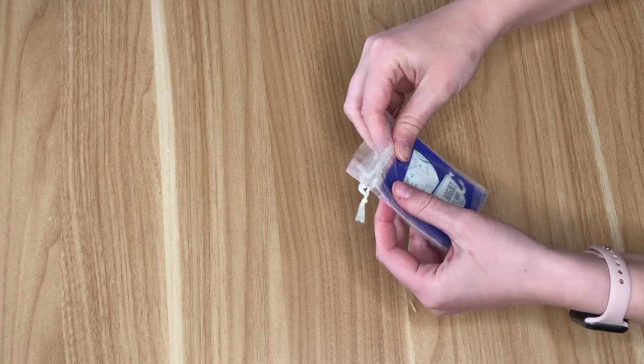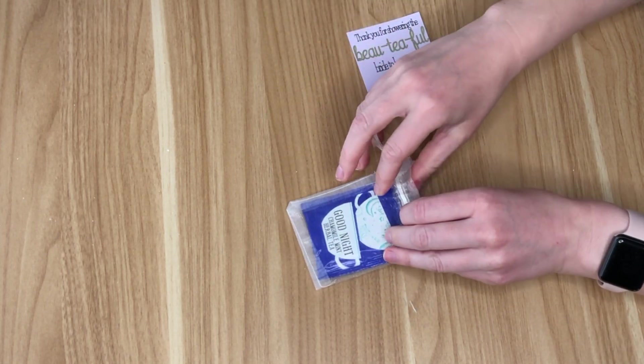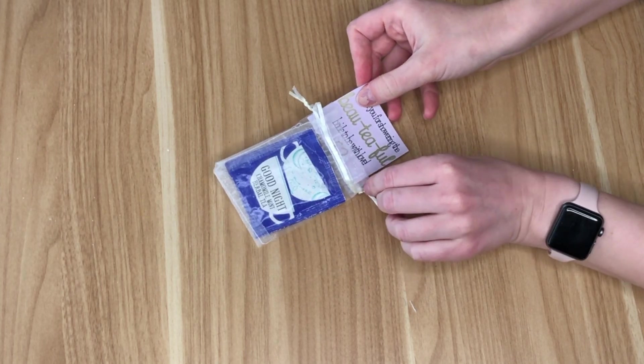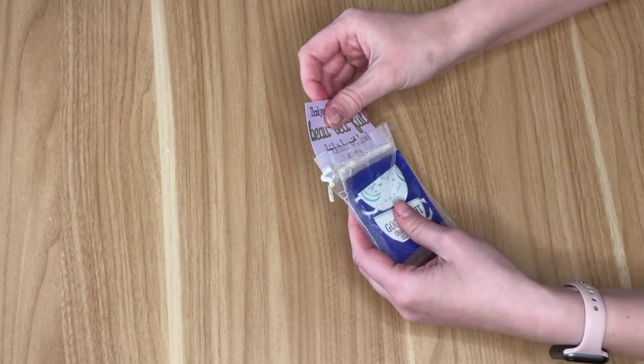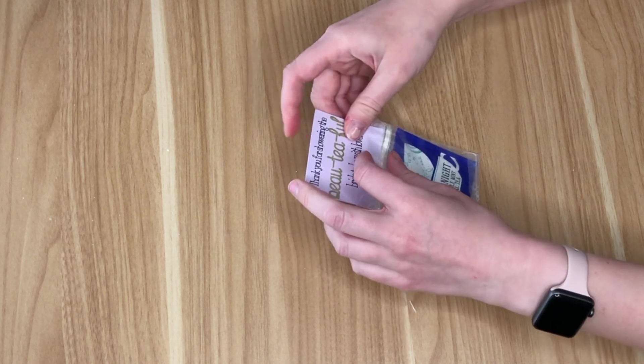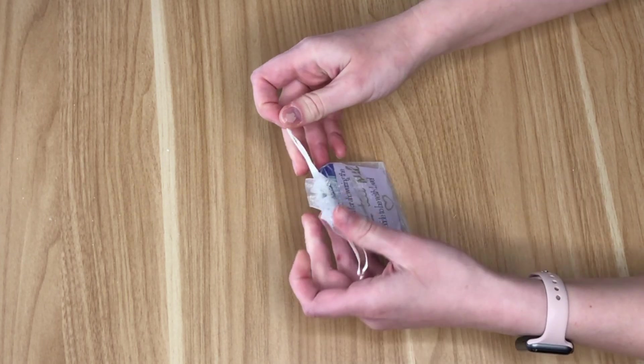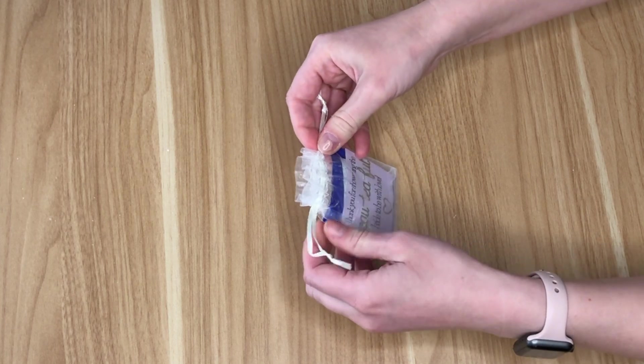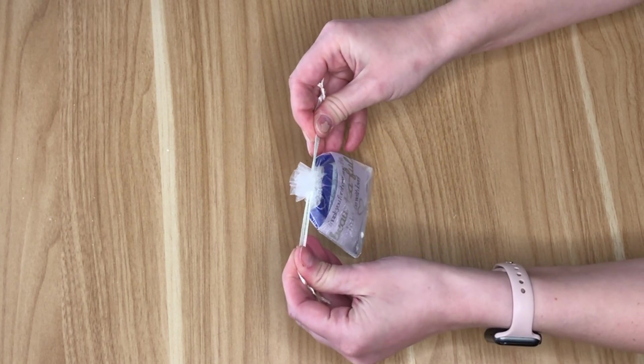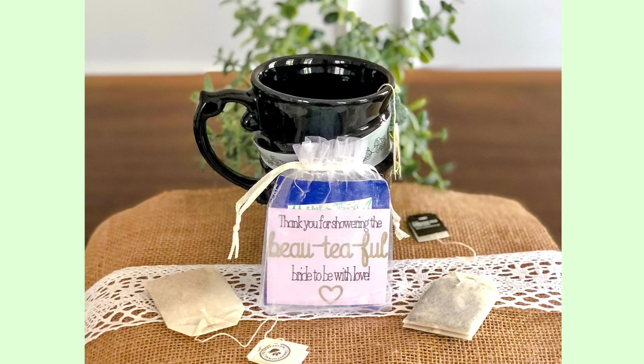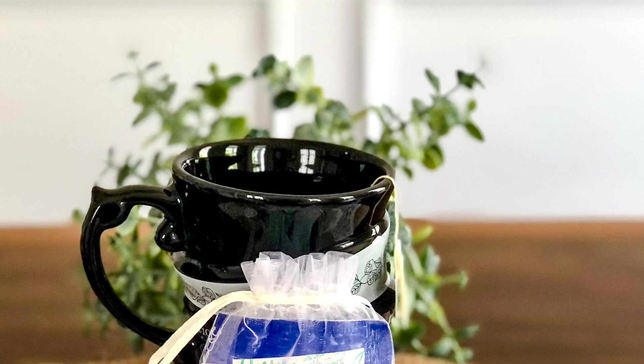But of course you can pick whichever tea you like. And then I'm using that little tag that I made in the previous DIY. It just says, thank you for showering the beautiful bride. If you wanted to add in a little something more to this shower favor, you could add in a honey stick or even I've seen them do a sugar stick. I think that would be an excellent touch to this DIY.